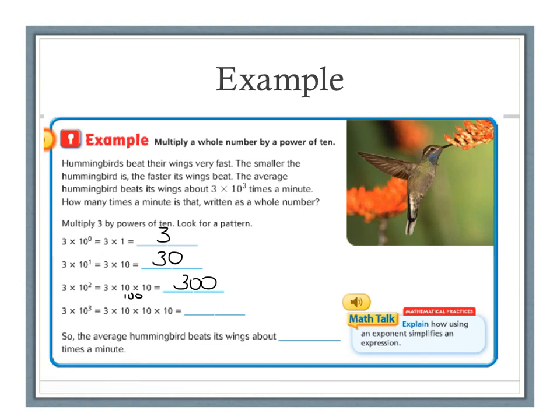And finally, 3 times 10 to the 3rd power is like 3 times 10 times 10 times 10, or 3 times 1,000. The value would be 3,000. So the average hummingbird beats its wings about 3,000 times a minute.